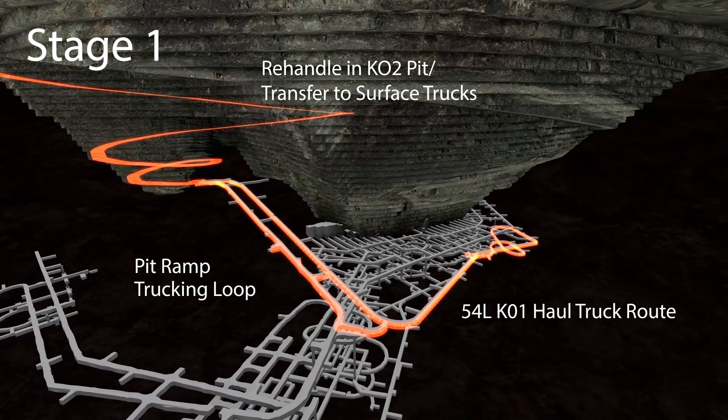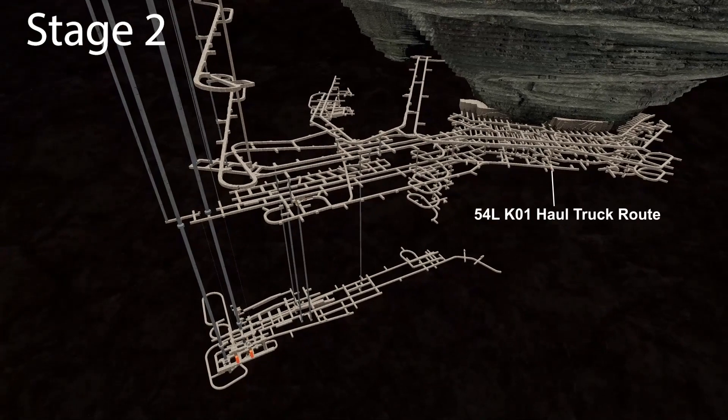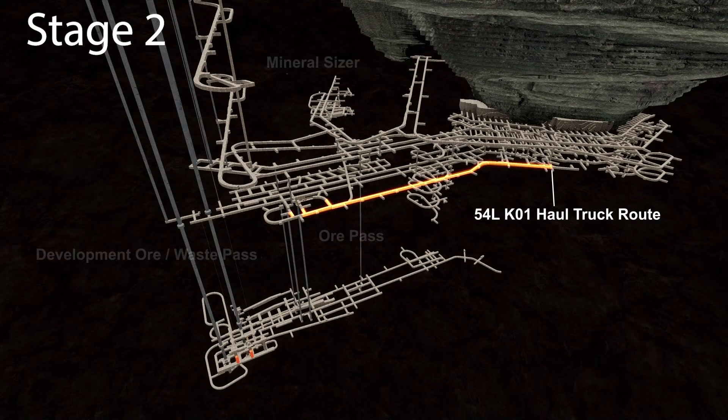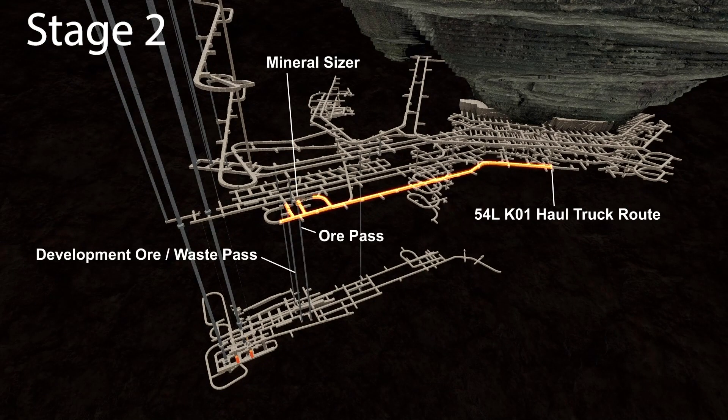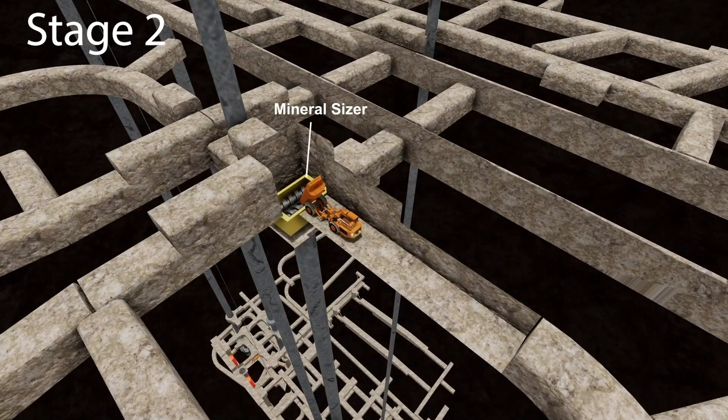Stage 2: Haul edge to a mineral sizer and waste passes are installed to connect to the bottom of the mine and the production shaft is put to use.